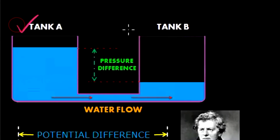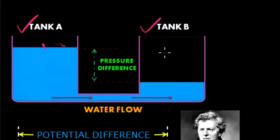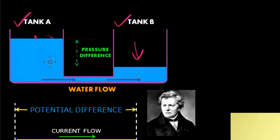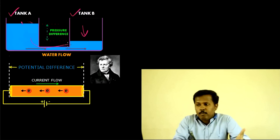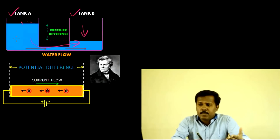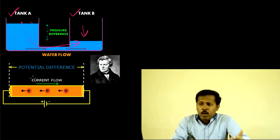Now look at the picture on the screen. You can see that there are two tanks — Tank A and Tank B — connected using a pipe. You can observe that the level of Tank A is higher compared to the level of Tank B. Since there is a pressure difference due to the level difference of the water, the water will always flow from Tank A to Tank B through this pipe.